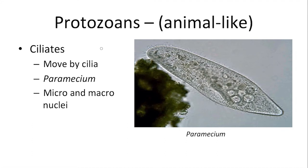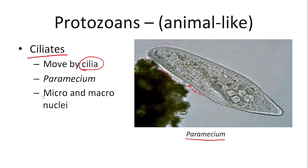The first protozoan I want to talk about are called the ciliates, named because the way they move is by tiny little hair-like structures. You can see all around the outside of this organism the tiny little hair-like structures called cilia — that's why they're called ciliates. This organism is a ciliate called a paramecium, and these organisms also have a micro and a macronucleus.